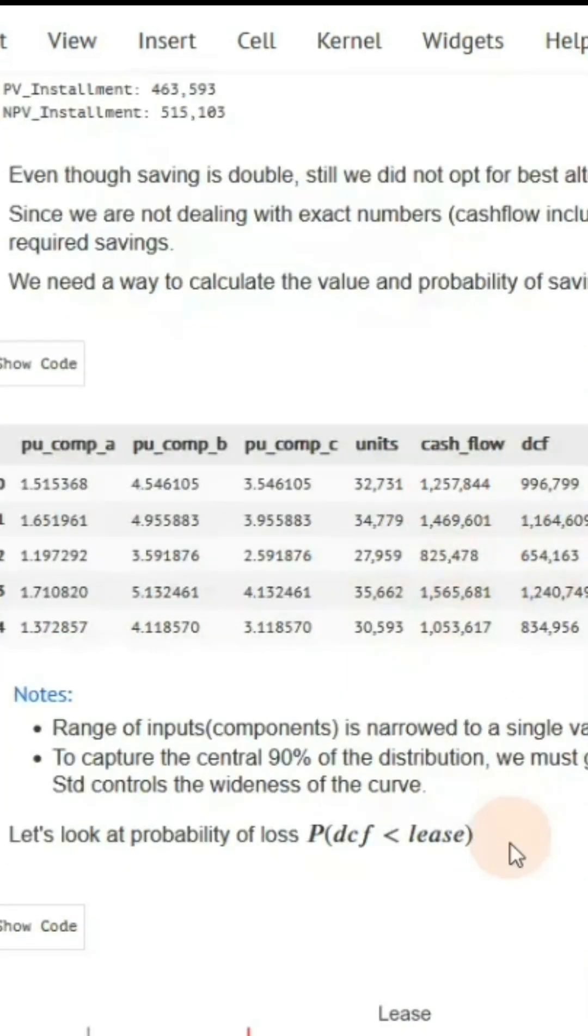Now it's time to look at the probability of a loss, which is when the discounted cash flow, or cash flow if you want to compare cash flow directly, is less than the lease.